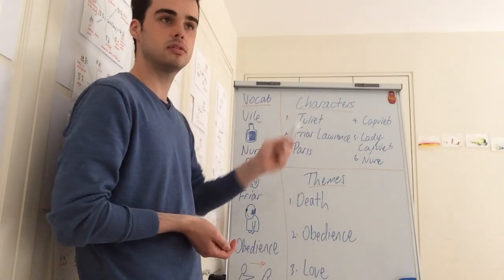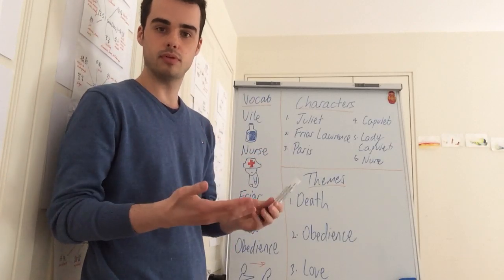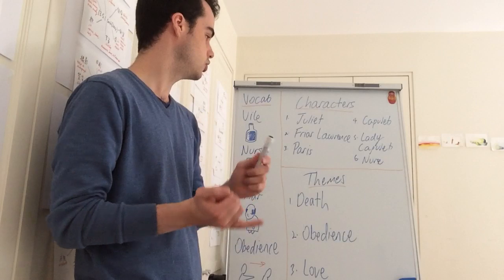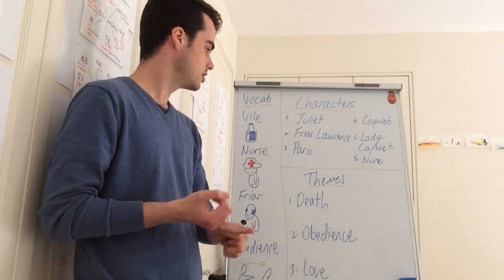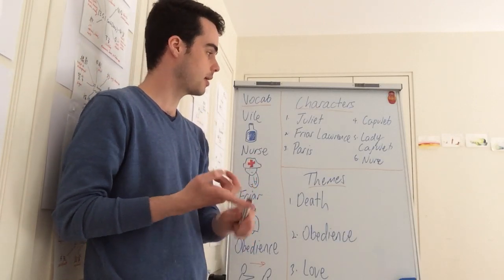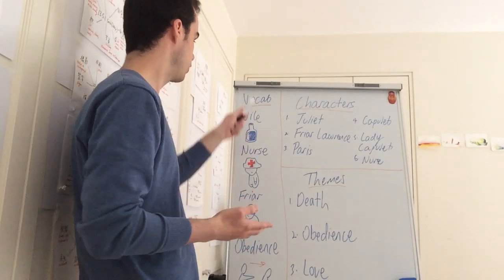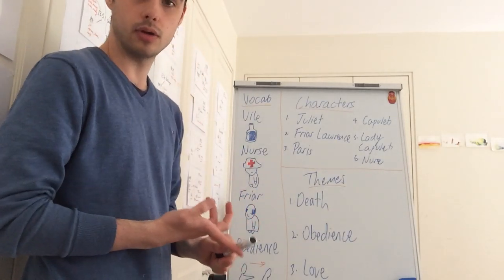So the characters, just as we talked about before, are the people that are in the play, so who you hear about, such as Juliet, Friar Lawrence, Paris, Capulet, Lady Capulet, and the Nurse.